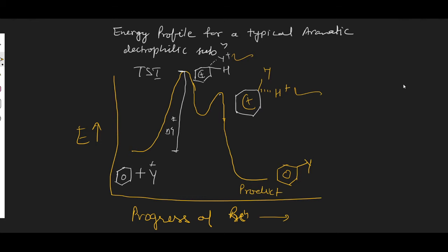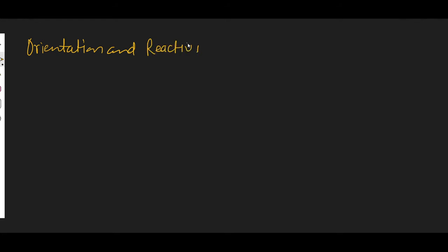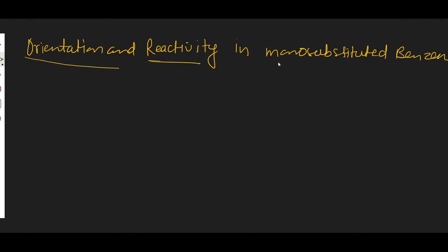Now the next topic is orientation and reactivity in mono-substituted benzenes. In mono-substituted benzenes, we have to discuss what will be the orientation and what will be the reactivity. Mono-substituted means a benzene ring on which only and only one substituent is present — that is called mono-substituted benzene.